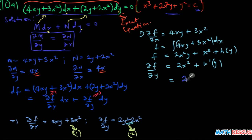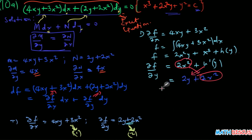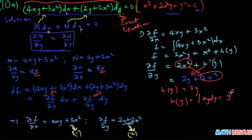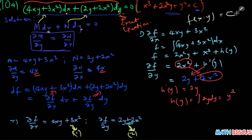For F to also satisfy equation 2, taking the partial derivative of F with respect to y must equal 2y plus 2x². Doing so gives 2x² plus h′(y), and x³ goes to zero. Setting this equal to 2y plus 2x², the 2x² terms cancel, which implies h′(y) must equal 2y. Therefore h(y) is the integral of 2y with respect to y, which gives y². We don't need the arbitrary constant here as it's included in the final solution.